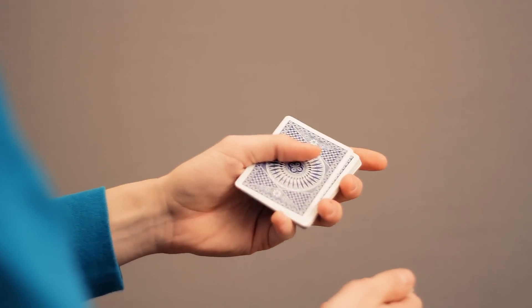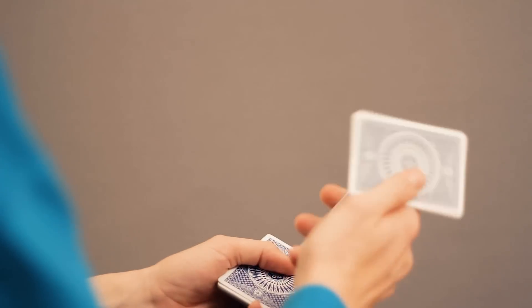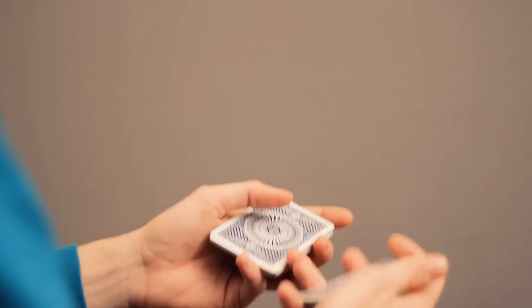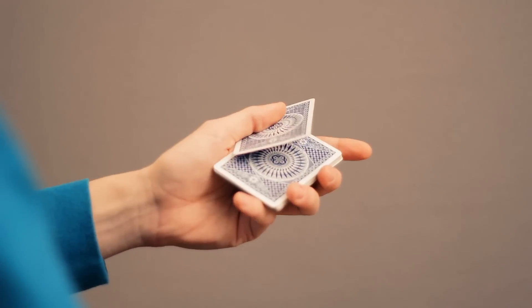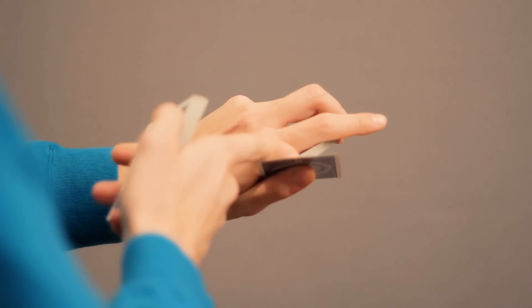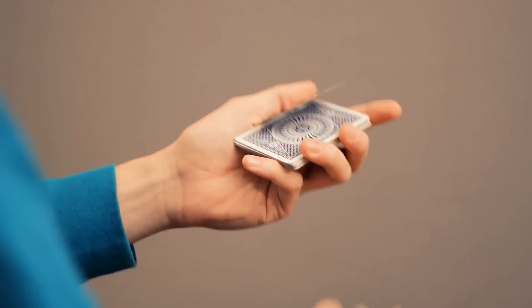Then you're gonna peel off a single card as if you're doing the salamander move. You're gonna peel off a single card but hold it with the edge and the thumb right here.